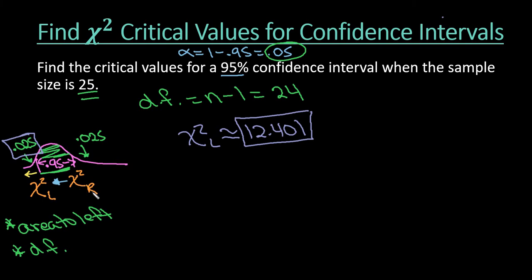And then to find the chi square to the right, this value here, we have to have the entire area until we get to the bottom. So I can either take 0.025 and add it to 0.95 and see that the area to the left is 0.975, or I can do 1 minus 0.025. Either way, it gives me the same thing.